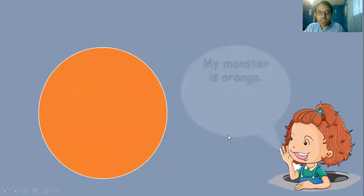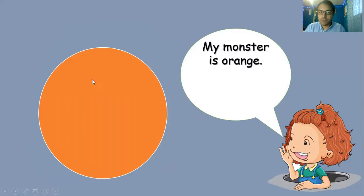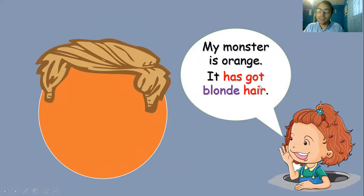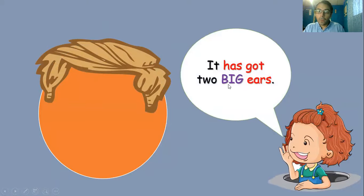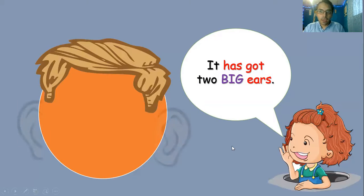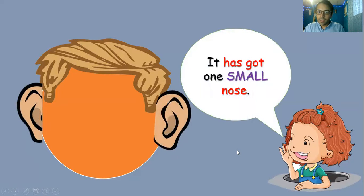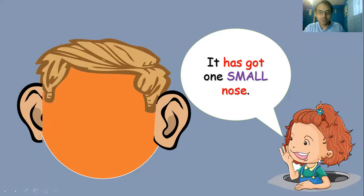Veamos qué tiene Jen. Jen dice: 'My monster is orange.' Es un monstruo naranja. It has got blonde hair — tiene el cabello rubio. Después dice it has got two big ears, grandes ears, las orejas. Two big ears. It has got one small nose — una nariz pequeña. Las orejas así grandes y la nariz pequeña.